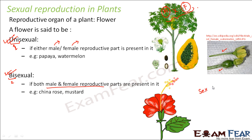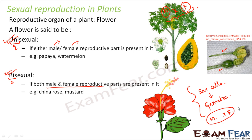Sex cells are also called gametes — these are specialized cells which help in the process of reproduction. All multicellular organisms contain multiple cells, but some specialized sex cells called gametes help in sexual reproduction. During sexual reproduction, the male gamete and the female gamete fuse together to form the new organism. Bisexual flowers can produce both male and female gametes, while unisexual flowers produce either male or female gametes.